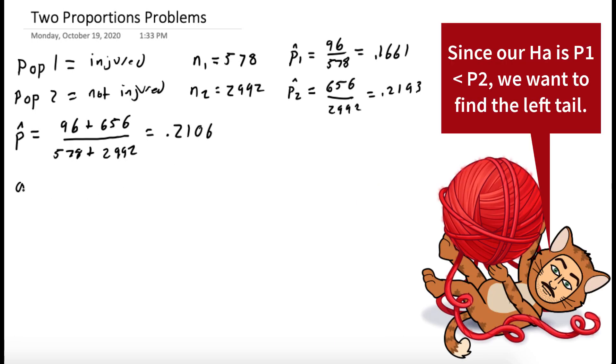For part A, we want to do a significance test. The null hypothesis is that the two proportions are equal: P1 equals P2. Our alternate hypothesis is that injured people are less likely to wear a helmet: P1 is less than P2. So we're going to have a left tail test to find our probability.